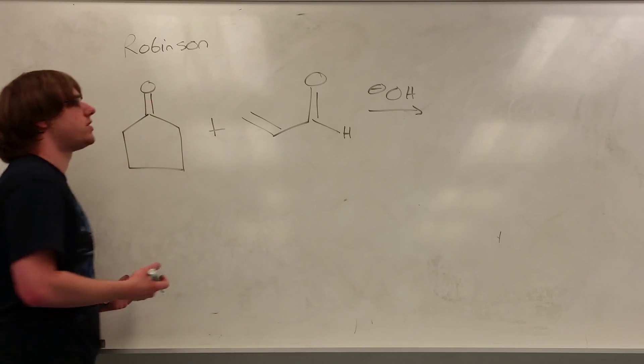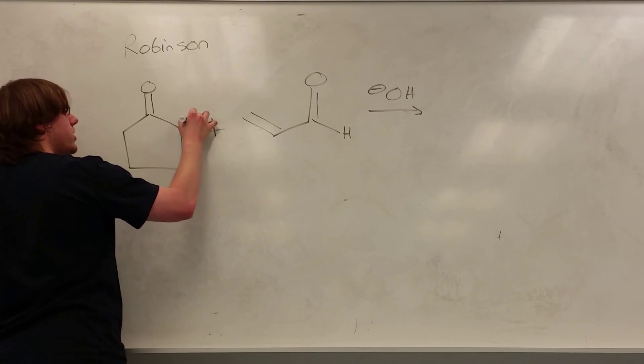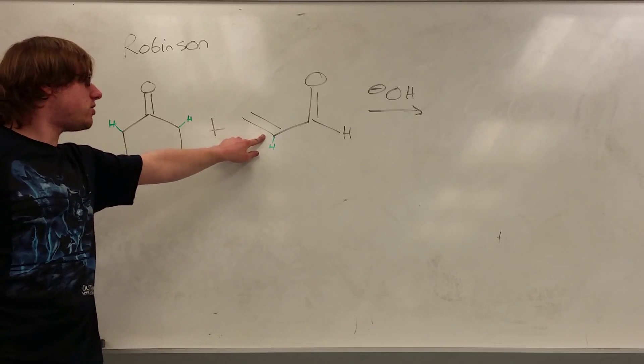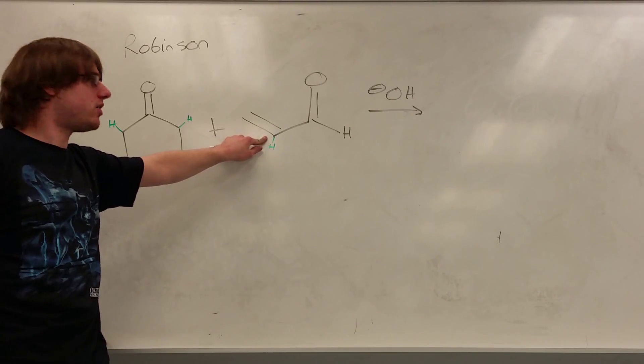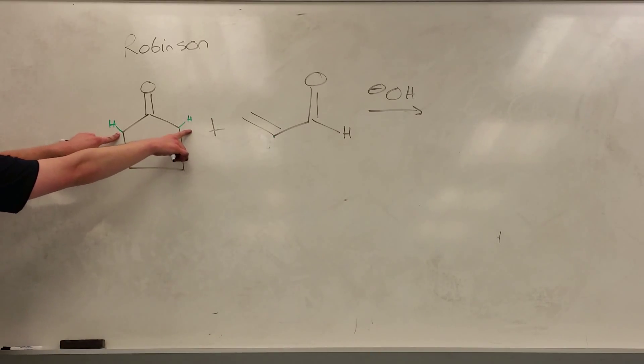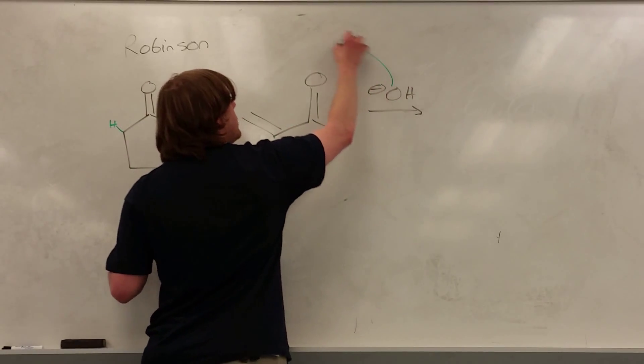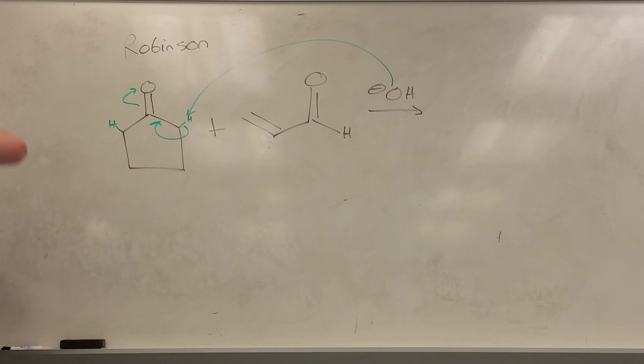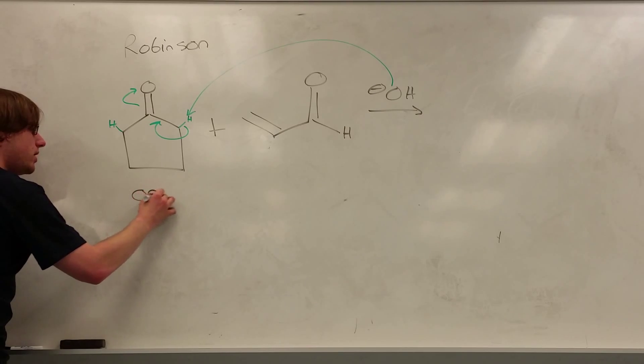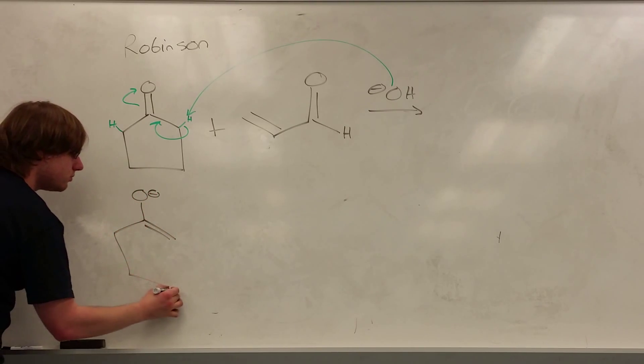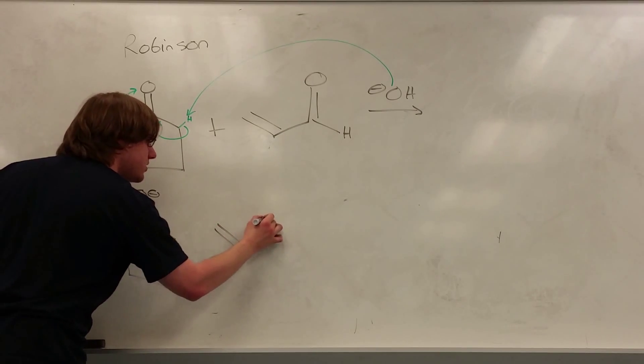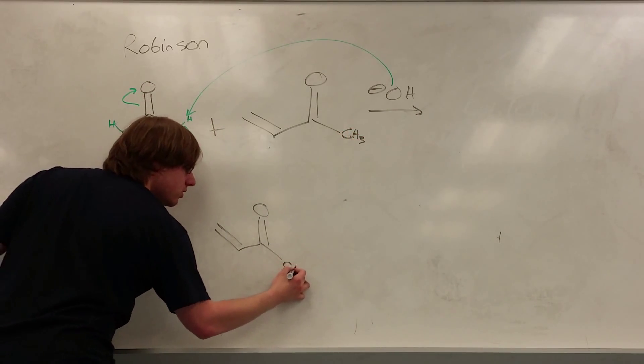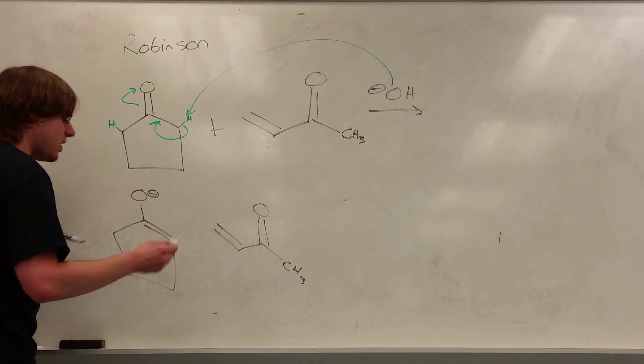The first step, deprotonate something, because you're in basic conditions. I have three alpha protons, one here, one here, and one here. Now, if you remember your Orgo 1 rules, the hydrogens that are directly attached to double bonds are never acidic, so we know this one's out. Now, between these two, they're exactly the same, so it doesn't matter which one I choose. I'm just going to choose the one on the right. So that OH- will come in, grab that proton, and form our enolate like usual business.